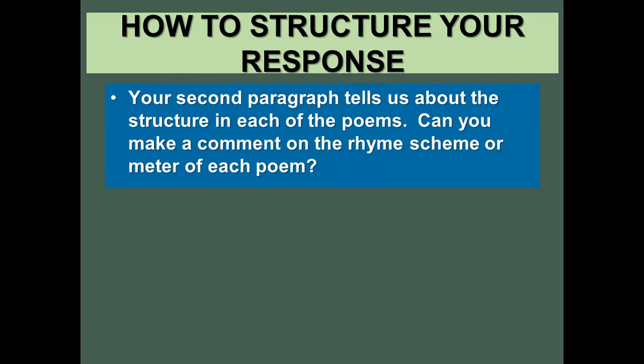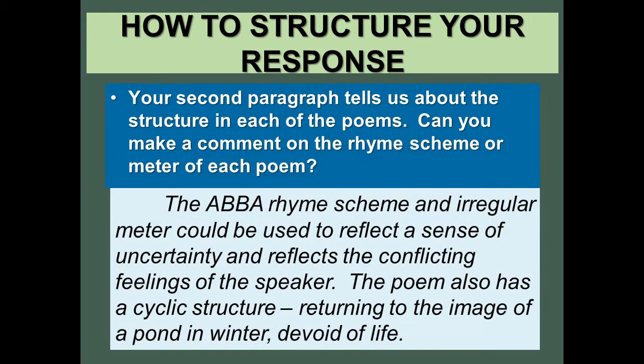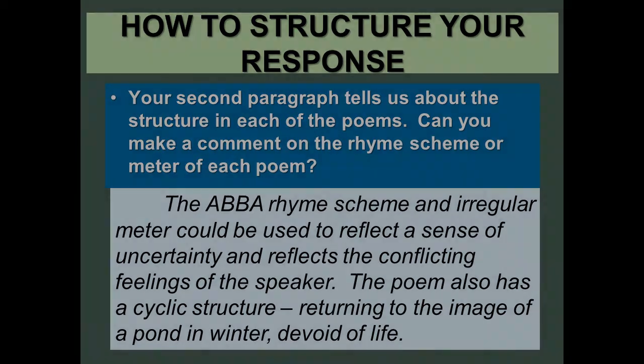Your second paragraph tells us about the structure in each of the poems. Can you make a comment on the rhyme scheme or the meter in each one? Here's an example for Neutral Tones: The ABBA rhyme scheme in a regular meter could be used to reflect a sense of uncertainty and reflects the conflicting feelings of the speaker. The poem also has a cyclic structure, returning to the image of a pond in winter, devoid of life.